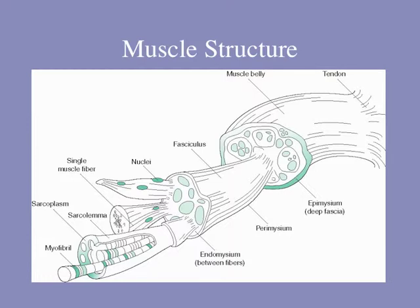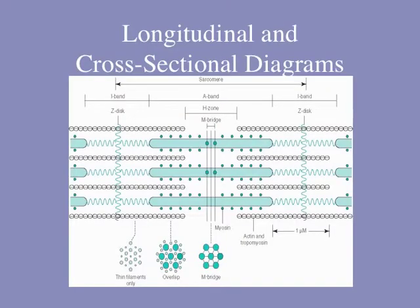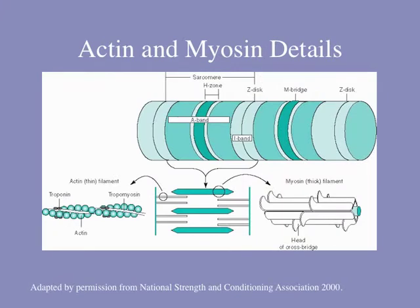The next several pictures relate to that in case you forget what some of these structures are. If you forget what the sarcoplasm is, we have a picture there. Again, a picture of the motor units — one nerve that connects to anywhere from one muscle fiber to thousands of muscle fibers, which is what we call a motor unit. Here is a microscopic picture reminding you what a sarcomere is, the cross bridges, the overlapping of the actin and the myosin.